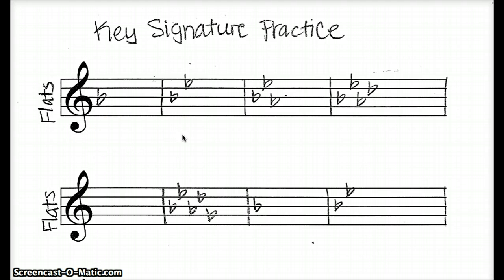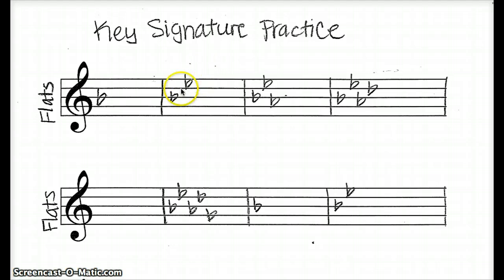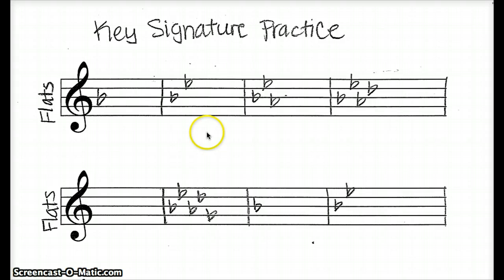Our second question is 2 flats. If you remember our order of flats — BEADGCF — we know that these two flats are going to be B and E. And if you go backwards, 1 flat is B, so we're actually going to be in the key of B-flat major.